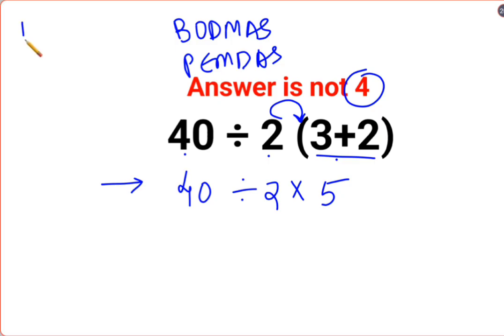Please understand, division and multiplication always hold equal precedence. So in sums like these, you are just expected to go from left to right. Whatever operation happens first on your left hand side has to be done first. So 40 divided by 2 is 20, multiplied by 5. So the answer for this question is supposed to be 100.